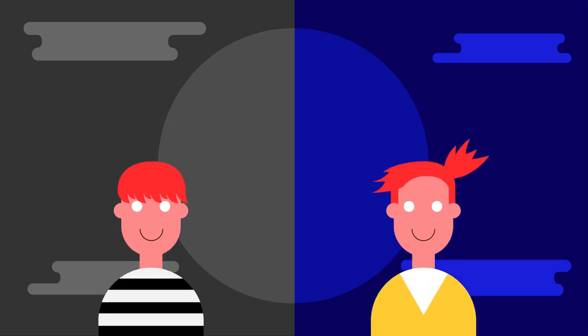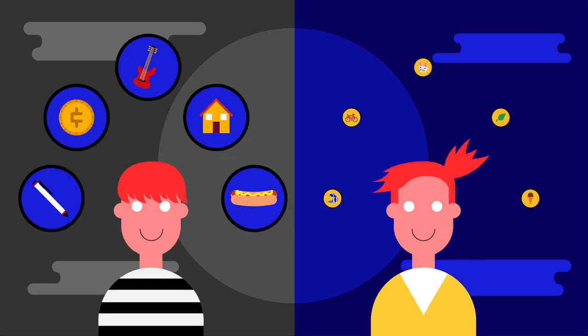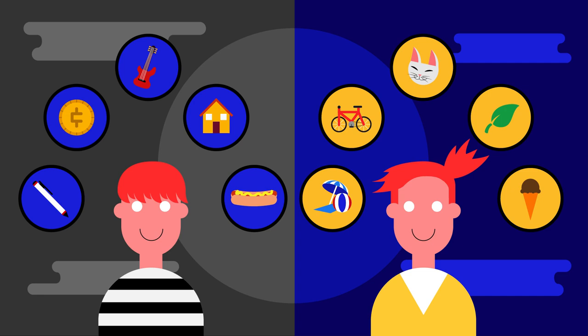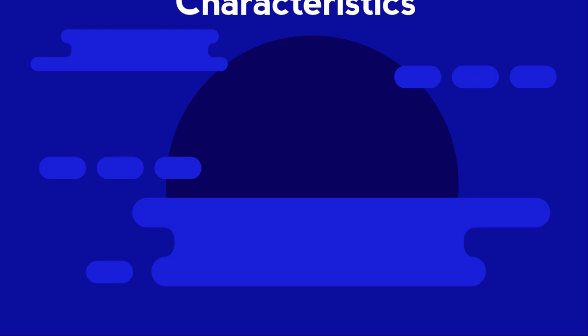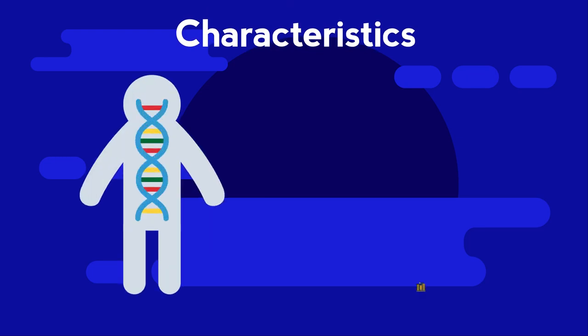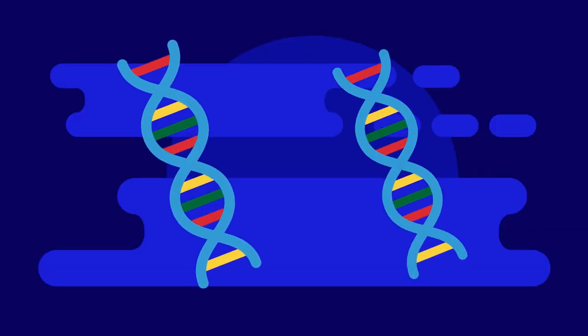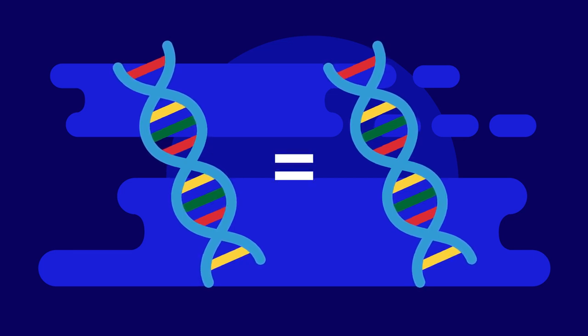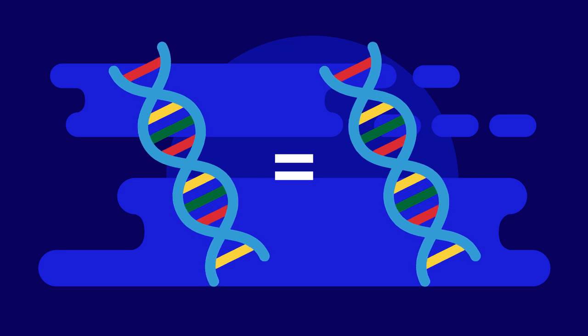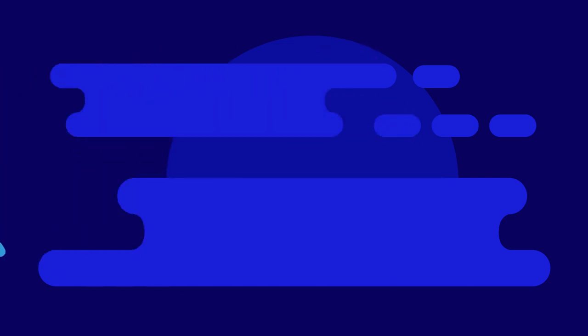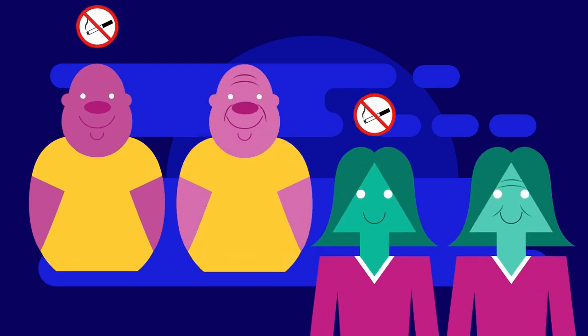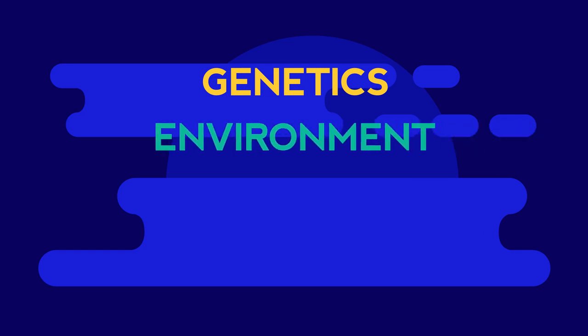In fact, twins often grow up to have very different personalities and preferences beyond their physical similarities. These studies showed that many characteristics are influenced by both genetics and the environment. Some studies actually used twins' identical genomes as a control to prove the effect of the environment on the body. For example, one study showed how skin aged differently by comparing smoker twins with non-smoker twins. Remember that the characteristics of a living organism are influenced by its genetics and its interaction with the environment, so both nature and nurture are responsible.